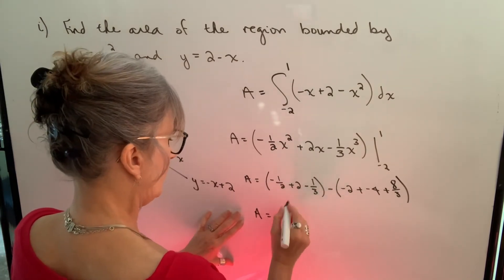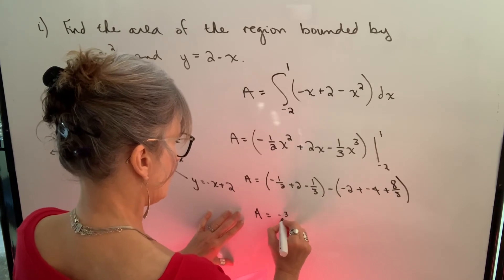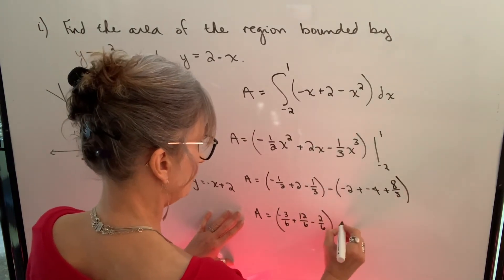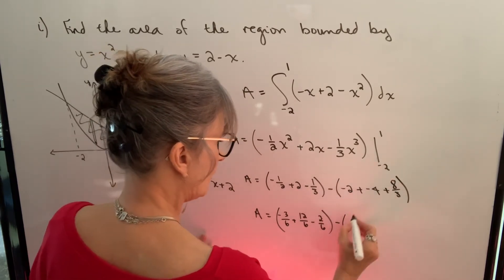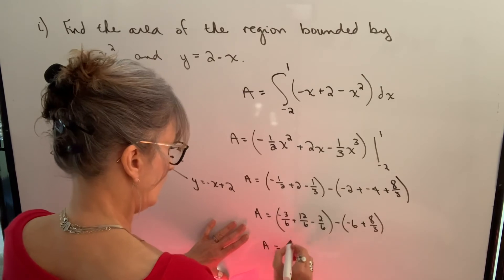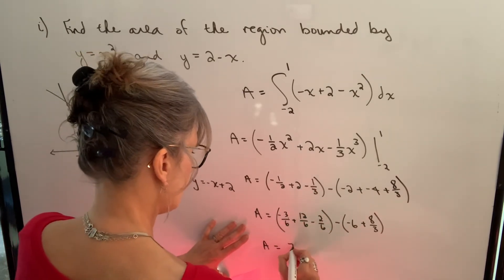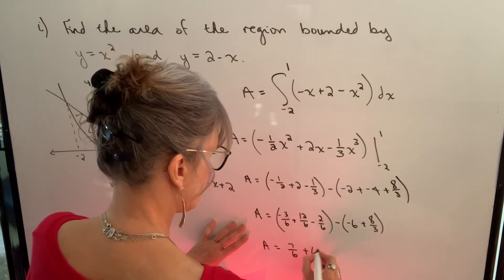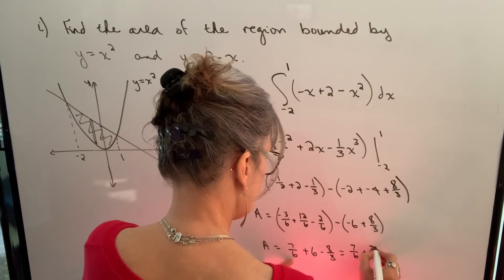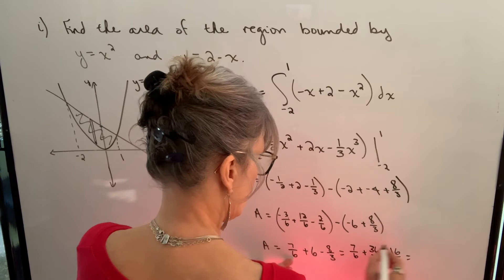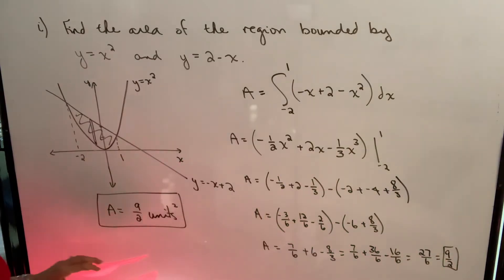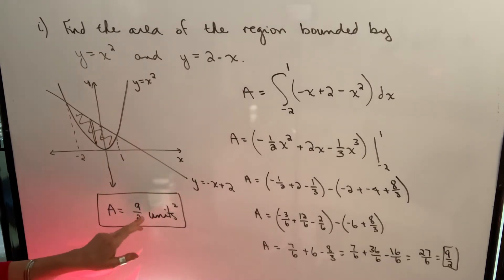Our lowest common denominator is 6. So we have: 12 sixths minus 3 sixths minus 2 sixths, which is 7 sixths, minus the second bracket which gives negative 6 plus 8 thirds. Converting to sixths: 7 sixths plus 36 sixths minus 16 sixths equals 27 sixths, which reduces to 9 halves. So the area of this region is 9 halves or 4.5 square units.